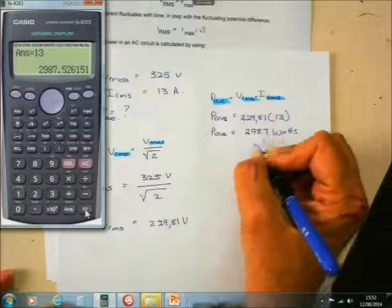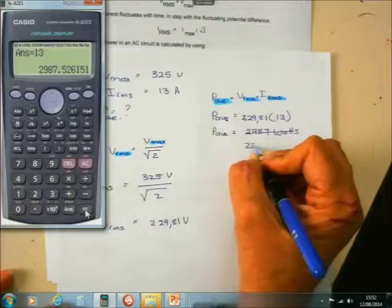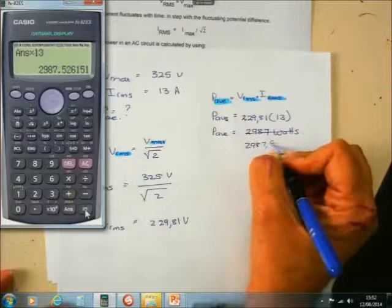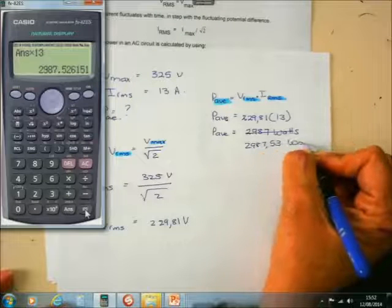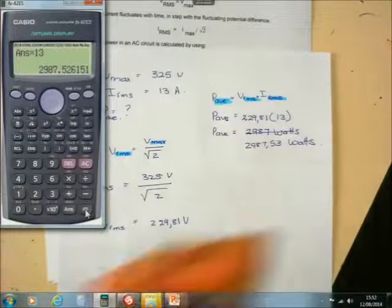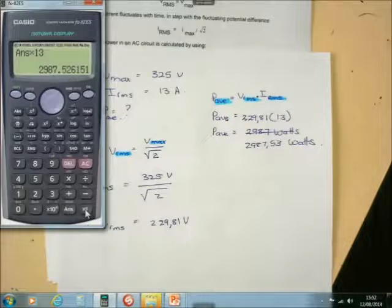Paverage is equal to 2987 watts. 2987. Let's rewrite it. 2987.53 watts. And remember, power is in watts. Have you got that?